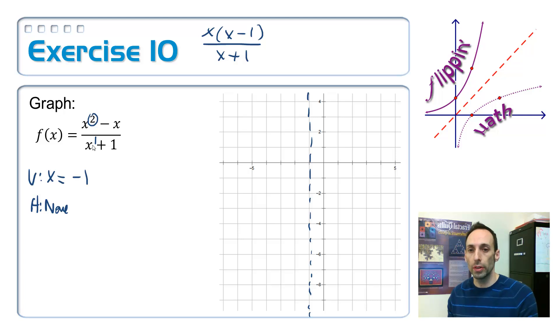So maybe I have a slant. Is the top 1 bigger than the bottom? Yeah, it is. So I do have a slant asymptote. So let's get the equation for that. Notice that what I'm dividing by right here is just x plus 1. So I should be able to get that with some synthetic division. So it would be negative 1 outside the box, and then up top I got a 1, a negative 1. Let's put a 0 as a placeholder there for the constant.